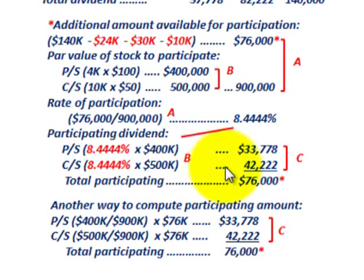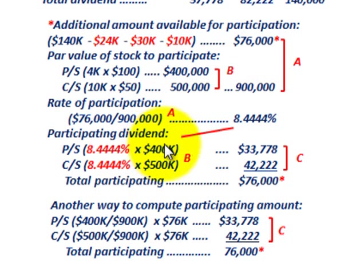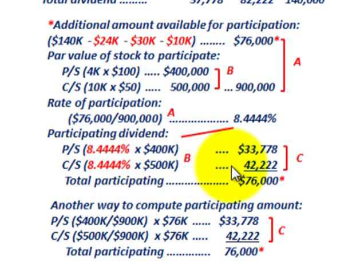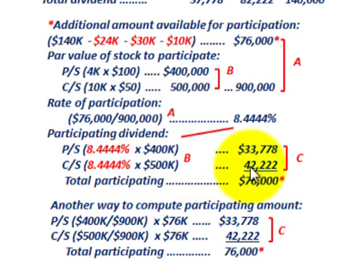Applying the rate of participation: 8.444% × $400,000 preferred par value = $33,778 allocated to preferred stock. Then 8.444% × $500,000 common par value = $42,222 allocated to common stock. You can see we've allocated the full $76,000 — $33,778 to preferred and $42,222 to common — based on par value and the rate of participation.